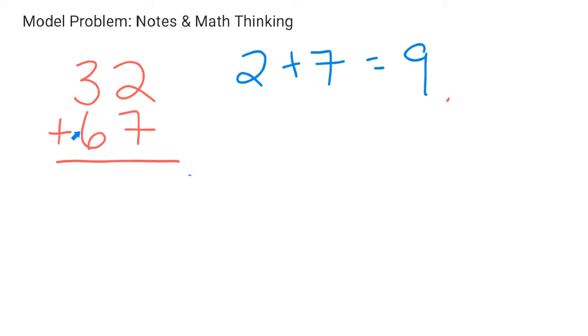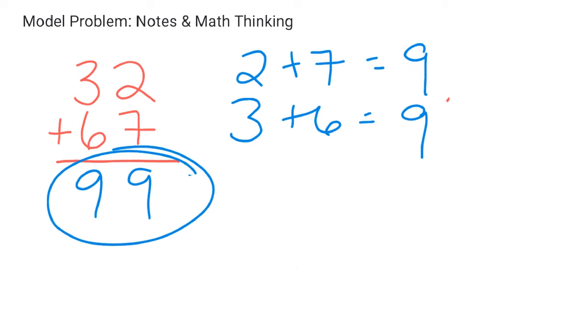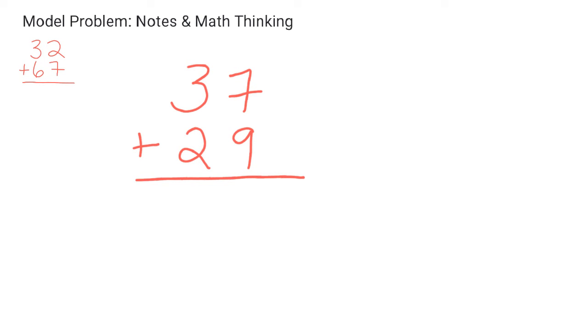And then I'm going to take three and I'm going to add six to it, okay? So I put my nine here. Then I have three plus six, okay? That also equals nine. So my sum or my final answer in this problem is 99, okay?